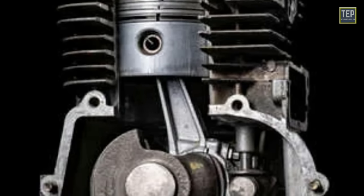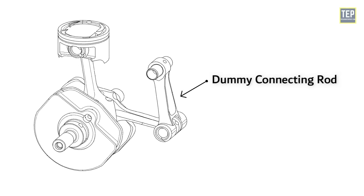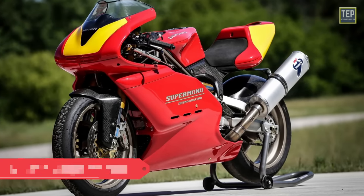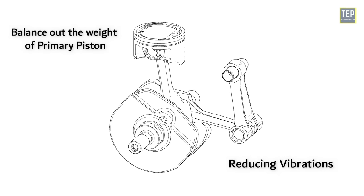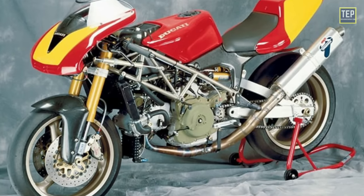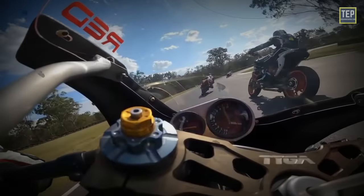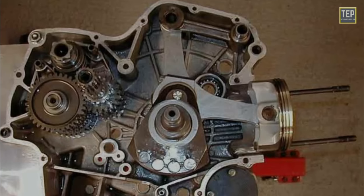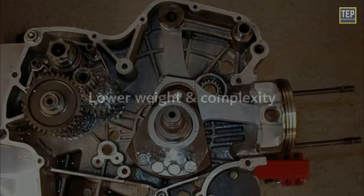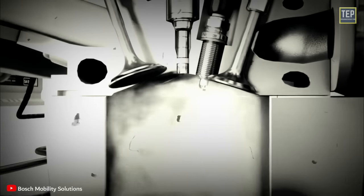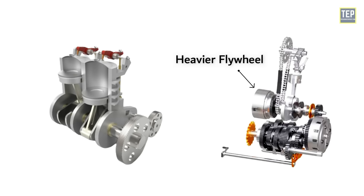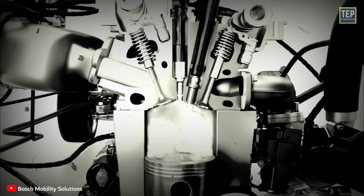In some cases, more extreme methods such as a dummy connecting rod are used — for example, in the Ducati SuperMono. The dummy connecting rod is attached to the same crank working the piston, while the other end is attached to a weighted rocker arm. This in theory balances out the weight of the primary piston, reducing vibrations. The setup also enables the engine to rev much higher, translating to more power. However, these balancing devices can reduce the benefits of single cylinder engines regarding lower weight and complexity, and the uneven power delivery often means a heavier flywheel is required.